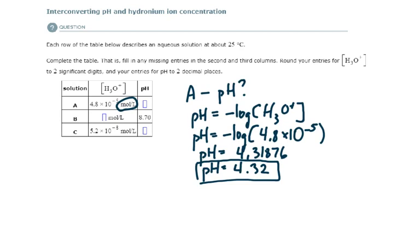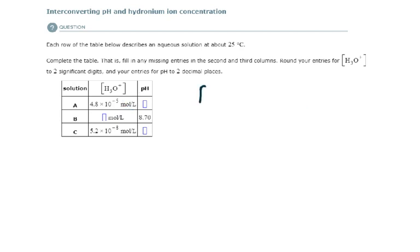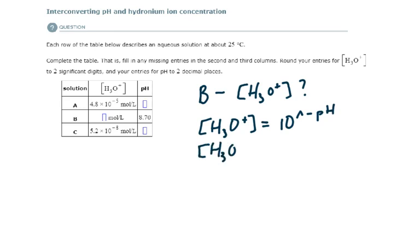When we look at solution B, they want us to find the hydronium ion concentration, and we know we can find that by using this formula. The hydronium ion concentration is equal to the anti-log of the equation that gives us pH. So here, the hydronium ion concentration is going to be equal to 10 to the negative pH value, which was given as 8.70.